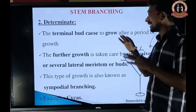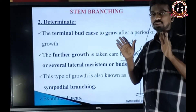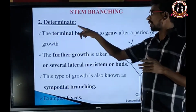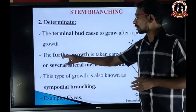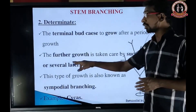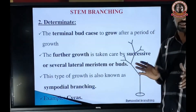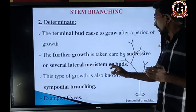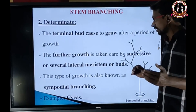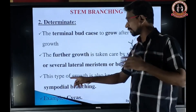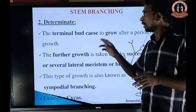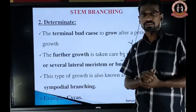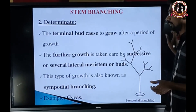Determinate growth means the terminal part stops growth after a period of growth. When the plant grows to a set height, the terminal part ceases growth and further growth is taken over by successive axillary or lateral buds. This type is also known as sympodial branching. So indeterminate means monopodial, and determinate means sympodial. Example: Cycas.